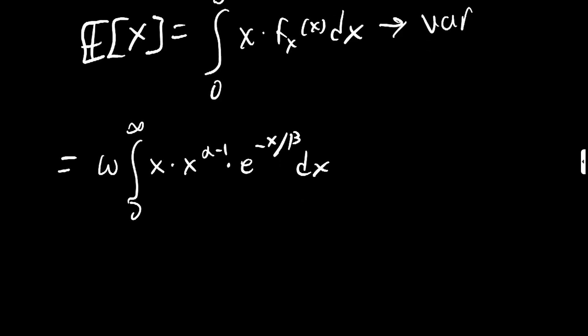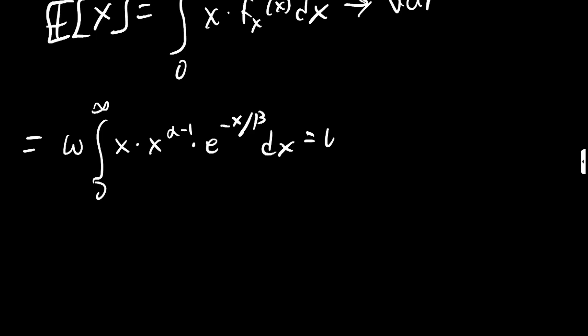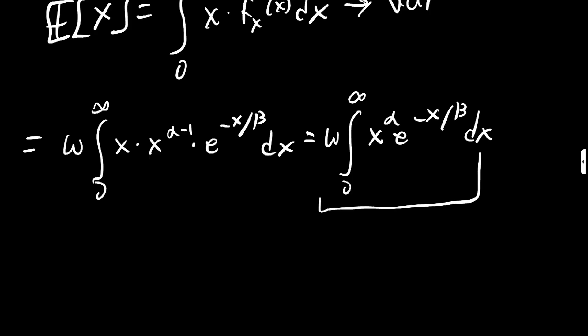Now we just combine the x's, giving us omega times the integral from 0 to infinity of x to the alpha times e to the negative x over beta. If you think we're going to use integration by parts, you would sadly be mistaken. While it's tempting, when you plug in your limits of integration you'll get undefined terms — infinities and zeros all over the place.